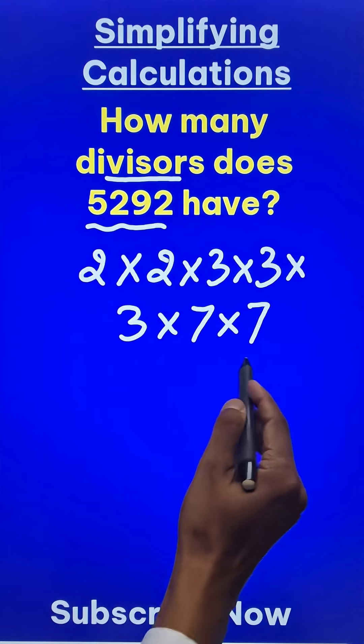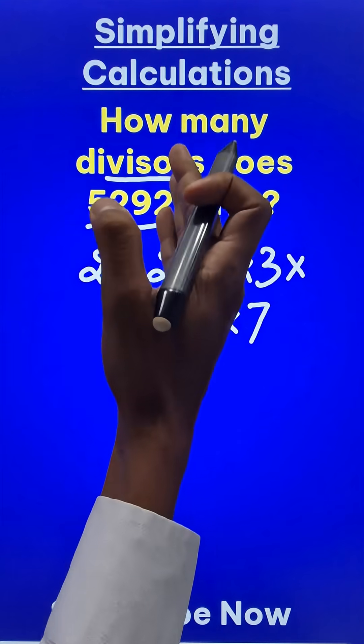So, if you are able to make the prime factors of 5292, half of the job is done.